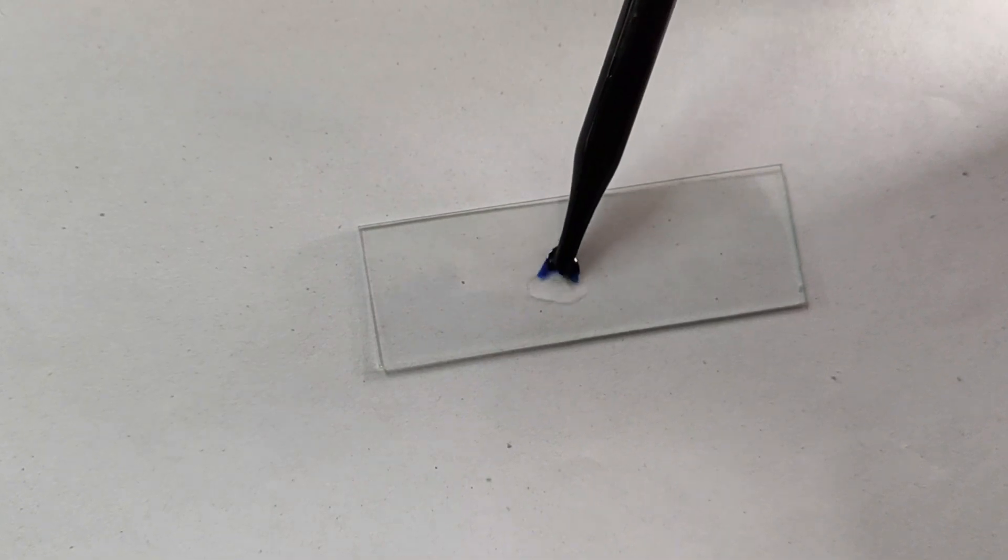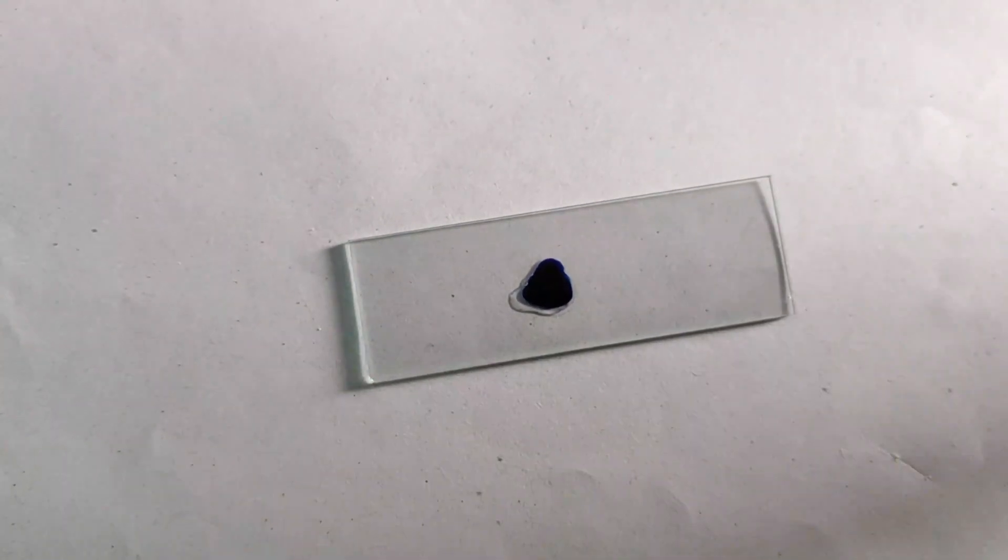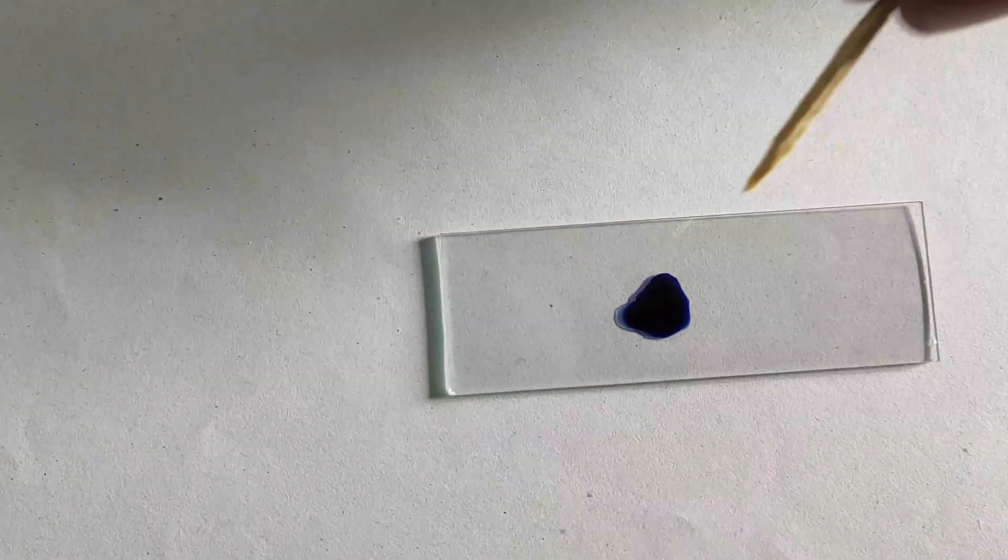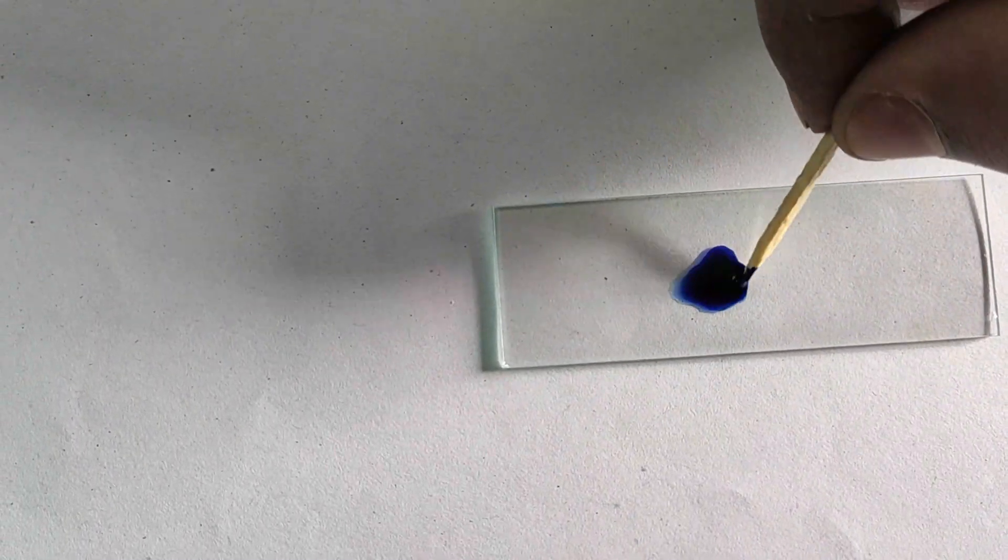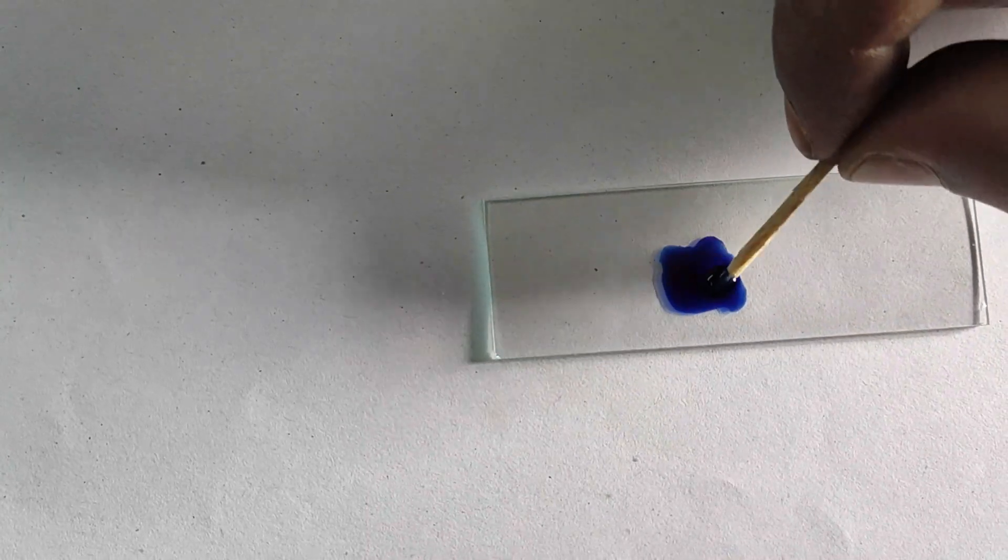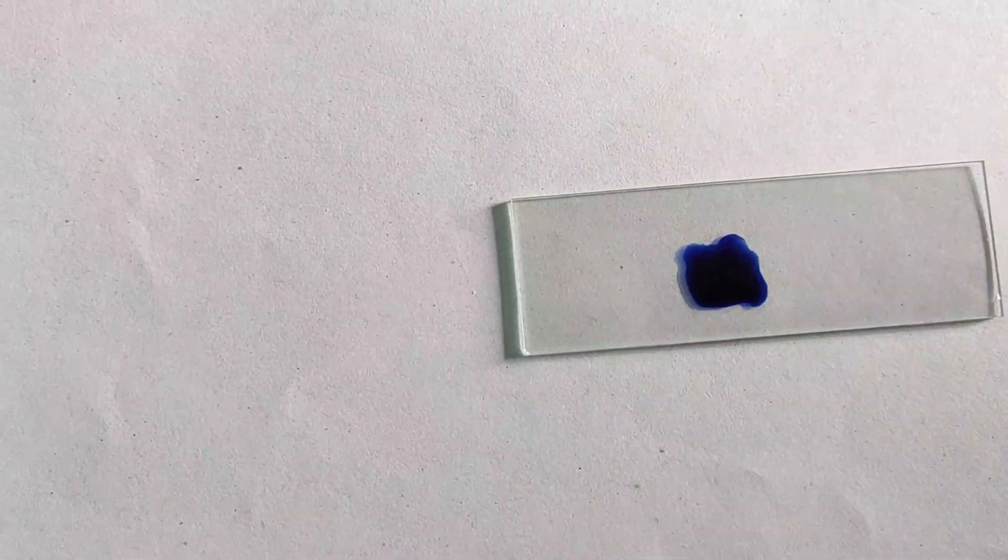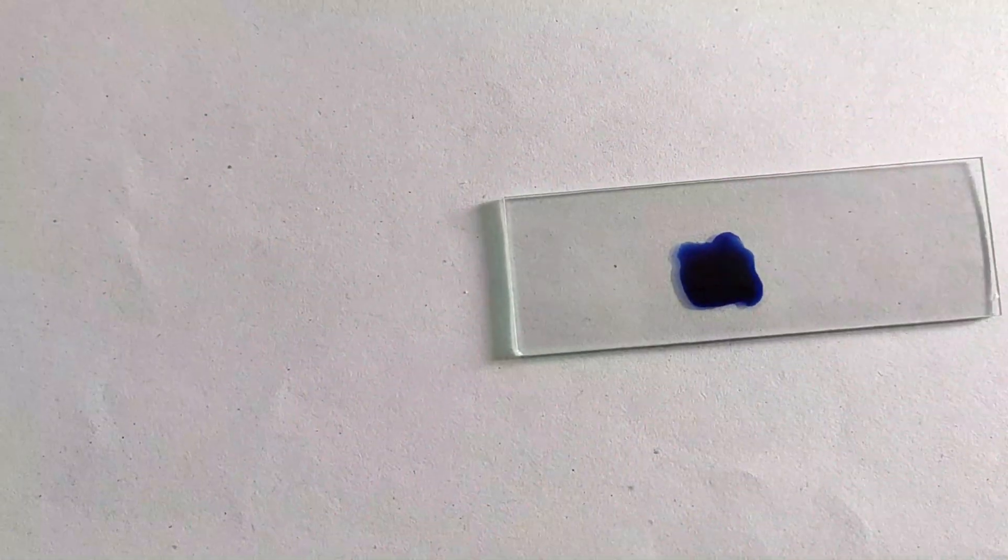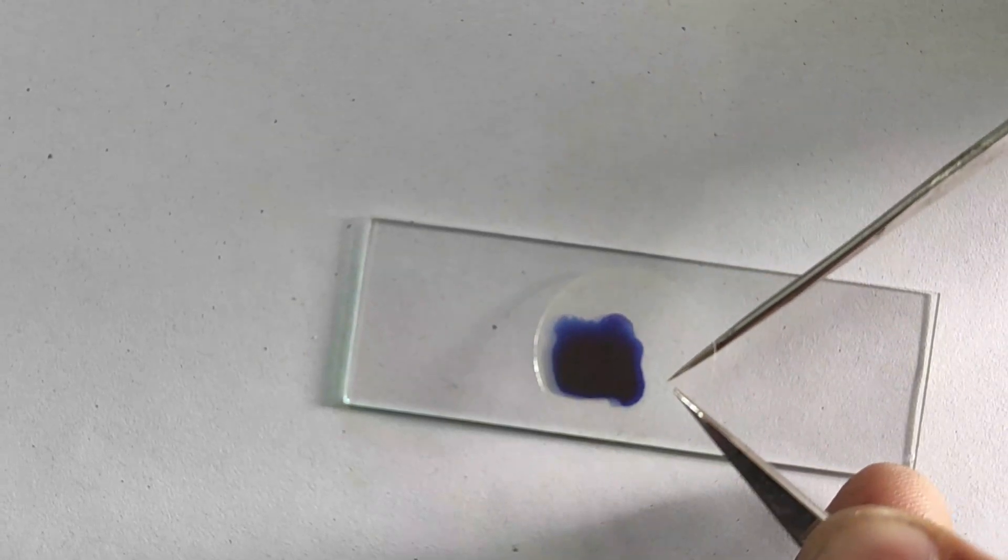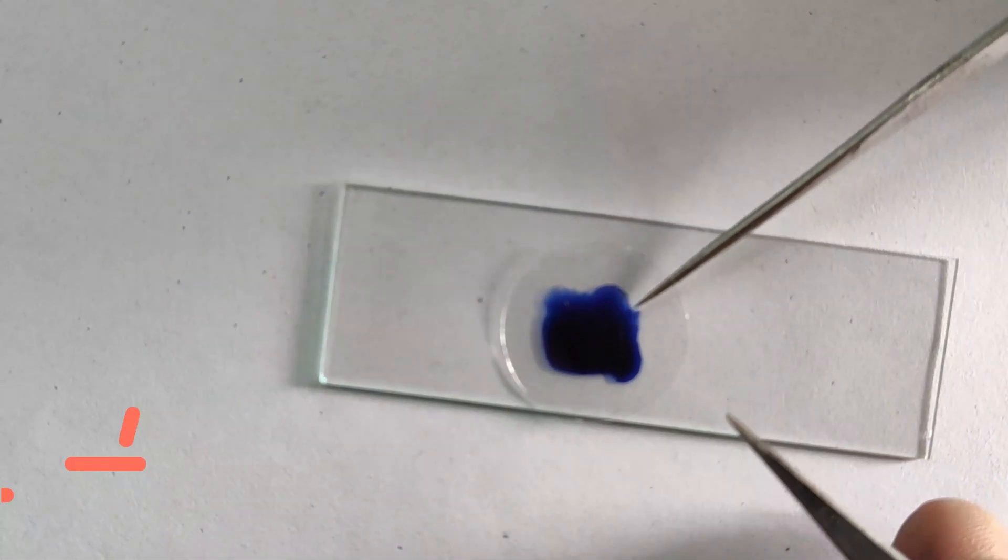Then finally we will mix up the material that we have collected from our cheek. Now with the help of a forcep and a needle, gently place a cover slip onto the material that has been mounted on the glass slide.